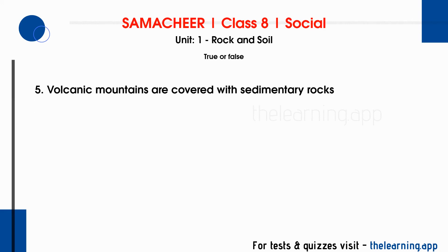Fifth question: Volcanic mountains are covered with sedimentary rocks. This is false. Volcano-related rock is igneous rock. There are two types of igneous rocks: extrusive and intrusive. So volcanic mountains are covered with igneous rocks, not sedimentary rocks. This is a false statement.